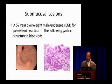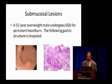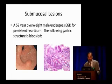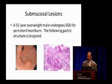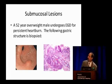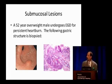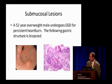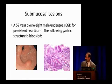52-year-old overweight male — I'm not 52, but otherwise I fit. Undergoes EGD for persistent heartburn. The following gastric structure is biopsied. They show you an endoscopy picture and histology.